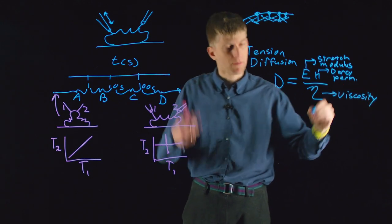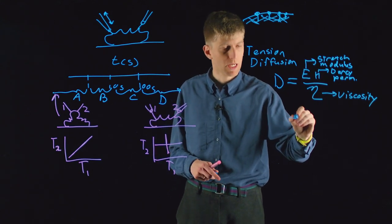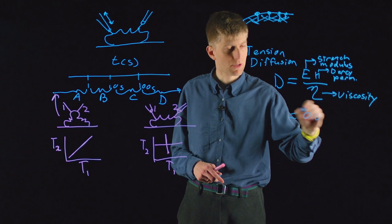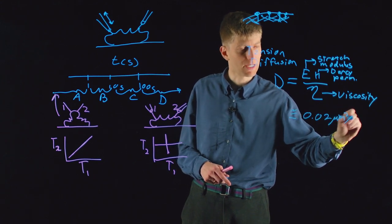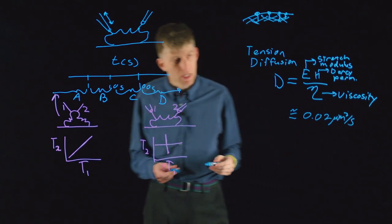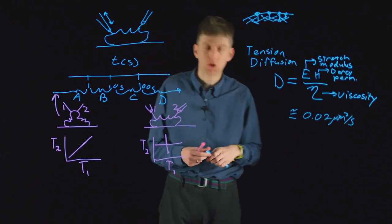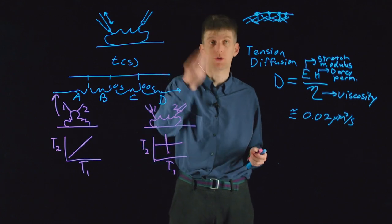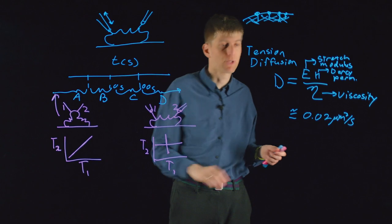Based on our measurements in multiple cell types, we found that this diffusion coefficient for membrane tension is about 0.02 microns squared per second, which is a very small number. This diffusion coefficient has nothing to do with the diffusion coefficient of tracers, of, for instance, individual lipids within the membrane. This is a different physical quantity.